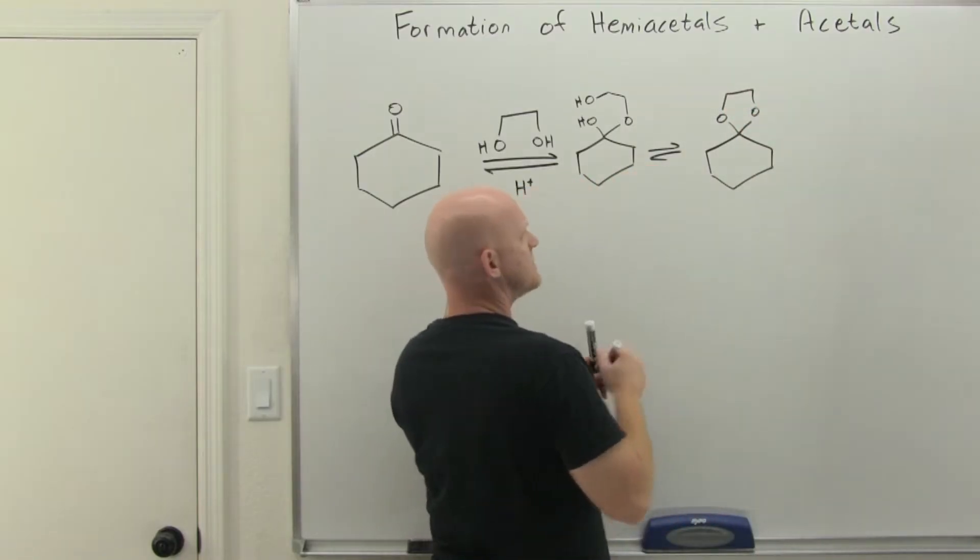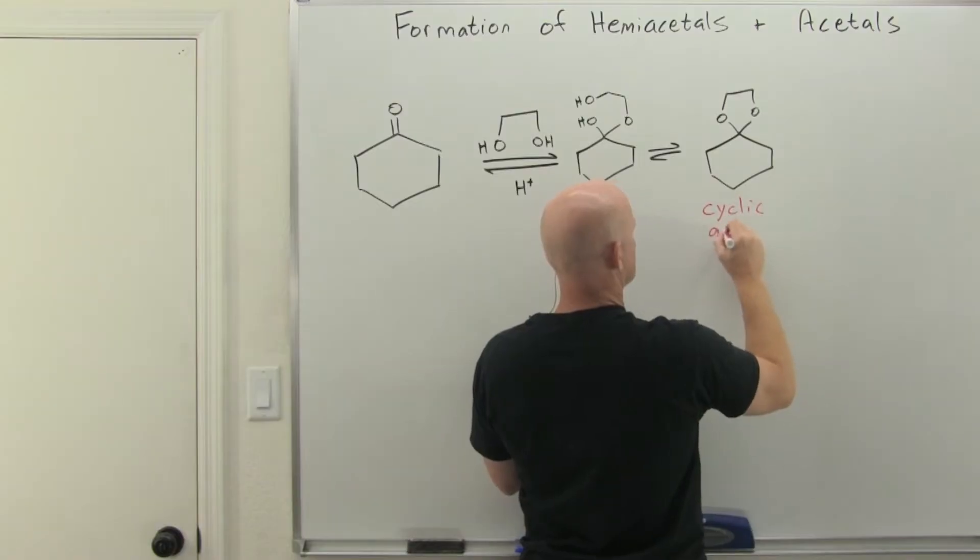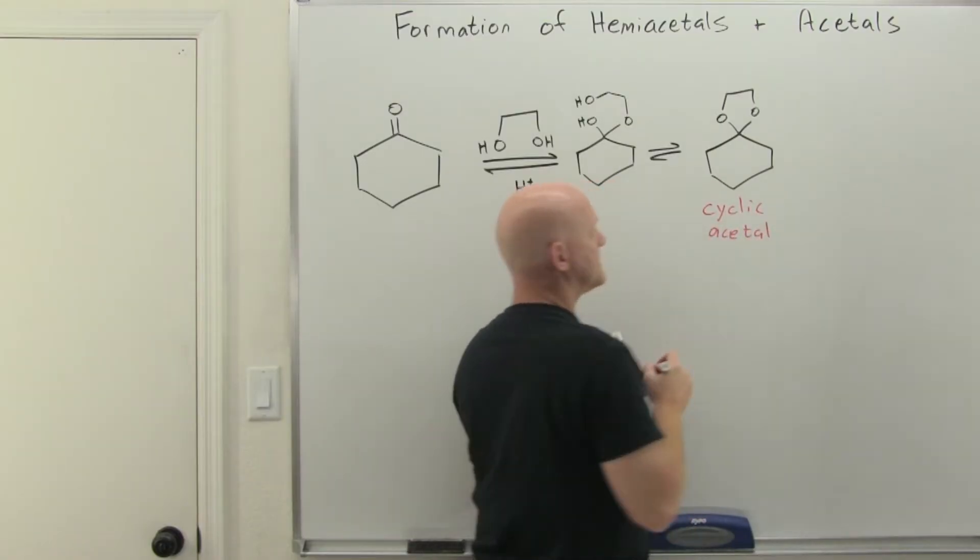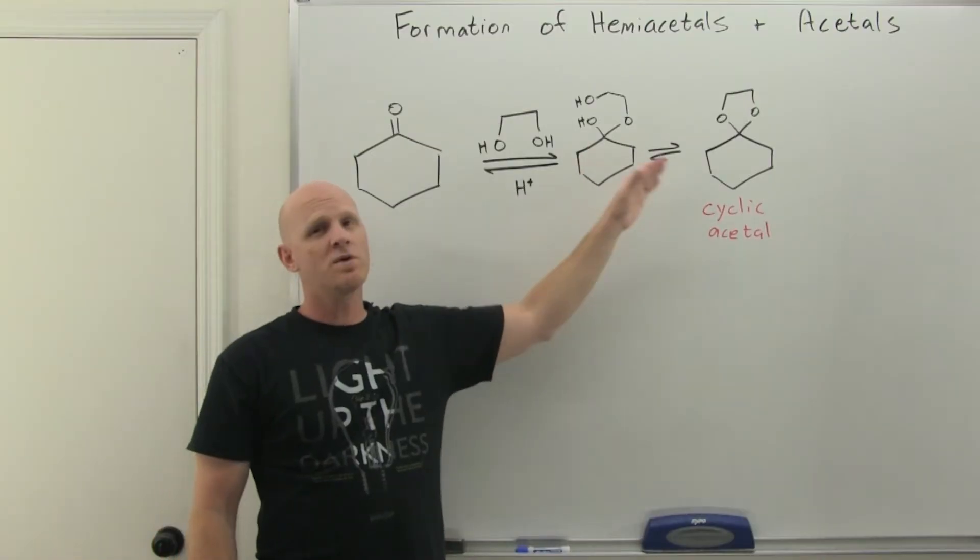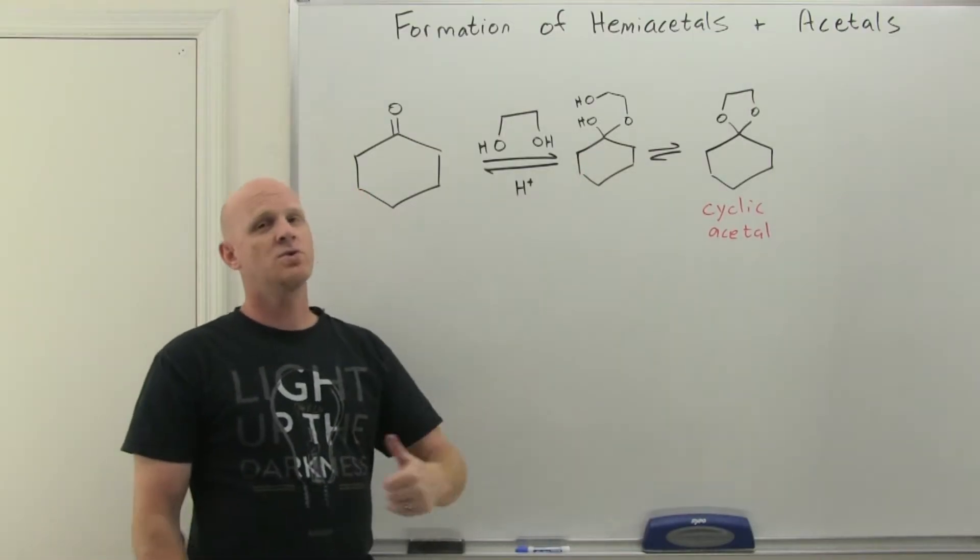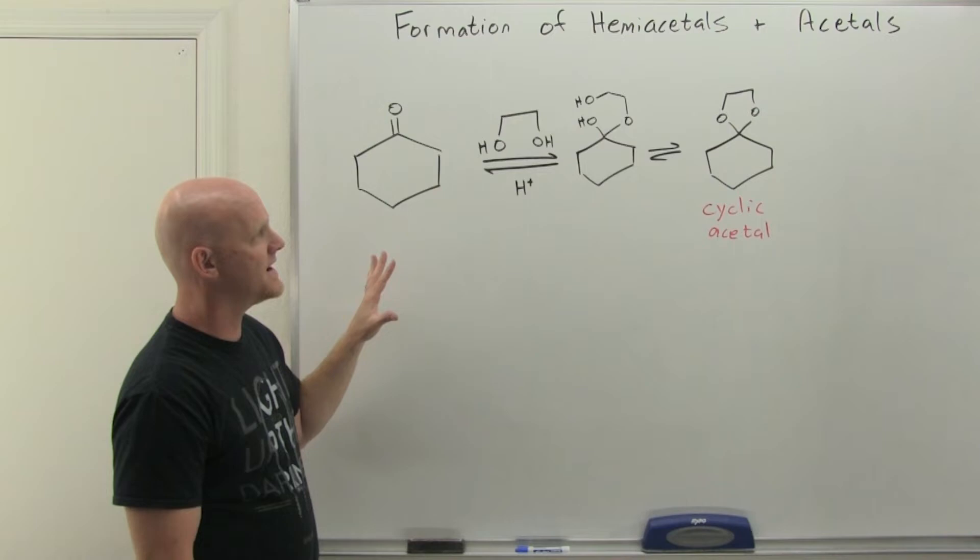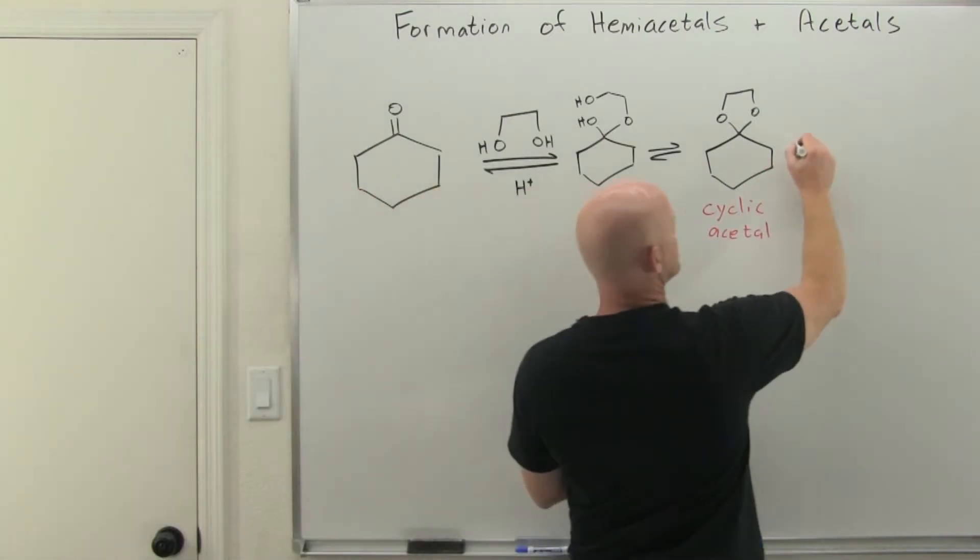And so here you're going to form that cyclic acetal. And it turns out in forming this cyclic acetal, the equilibrium constant for forming this is much more favorable than when we just used two equivalents of a regular alcohol. And the idea is that we form this, again, we're also going to form some water here.